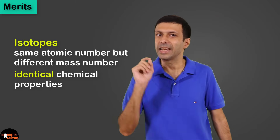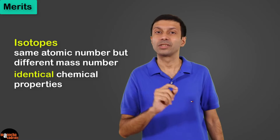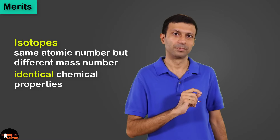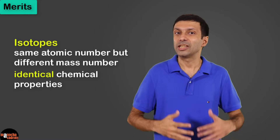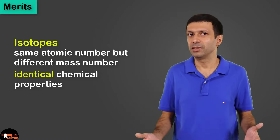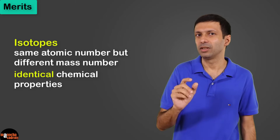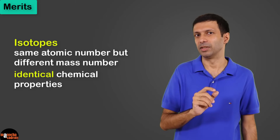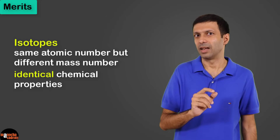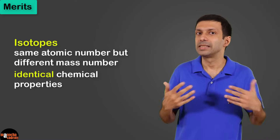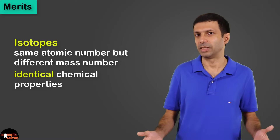So isotopes of an element belong in the same position as the element, and that makes sense because they have the same chemical properties.